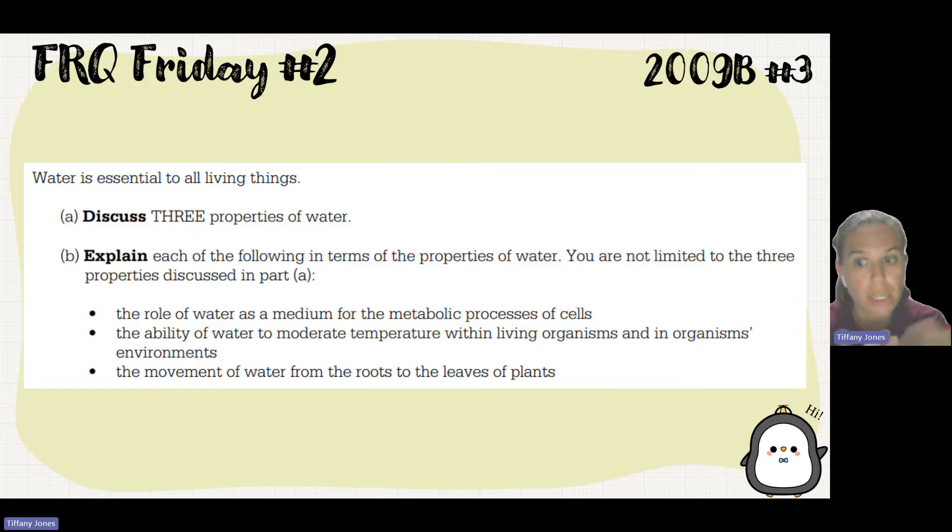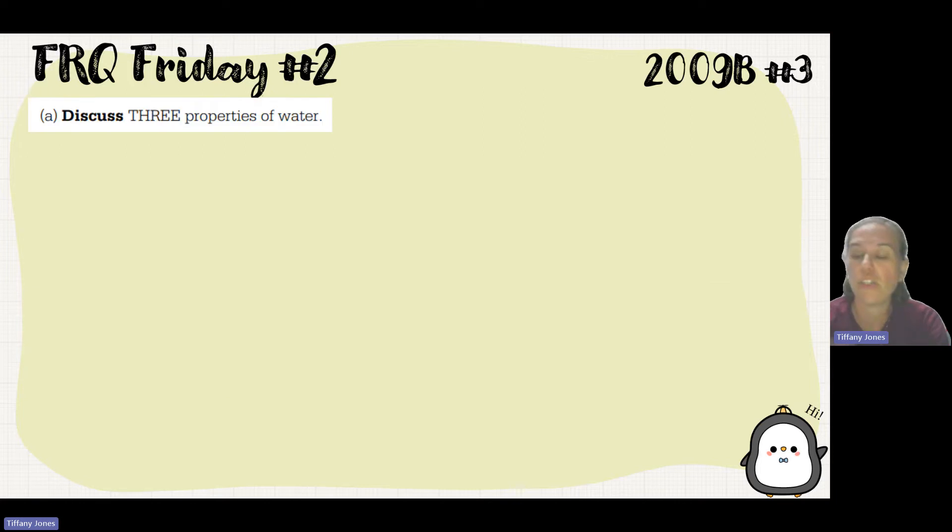It's polar because there's an unequal share of these electrons. Oxygen is partially negative and hydrogen is partially positive. Based on that, we need to connect it to different properties, and in part B we'll explain different phenomena like the role of water as medium, ability to moderate temperature, and movement of water from roots to the leaves in plants.